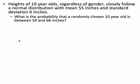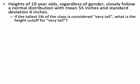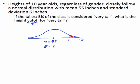Next problem: heights of 10-year-olds closely follow a normal distribution with mean 55 and standard deviation 6. If the tallest 5% of the class is considered very tall, what is the height cutoff for very tall? The keyword here is 'cutoff' — they're giving us an area and want back a height. They're giving us the area in the upper tail at 5%, meaning the cutoff is above the mean.